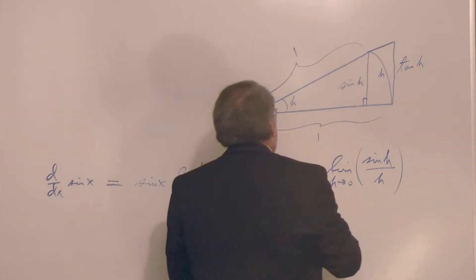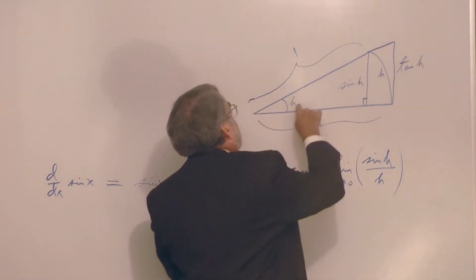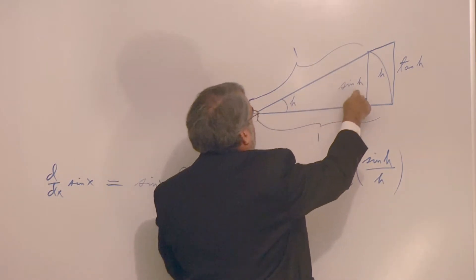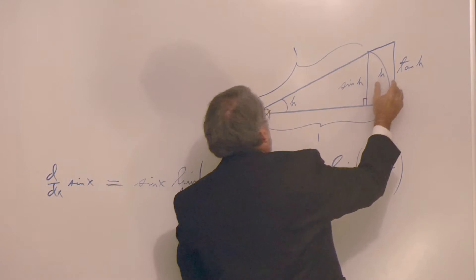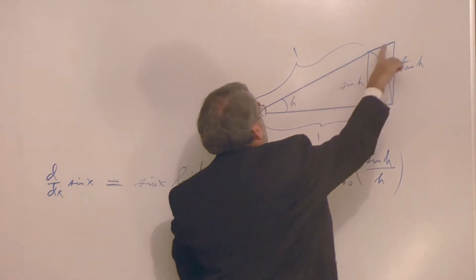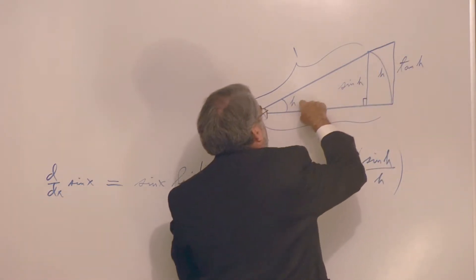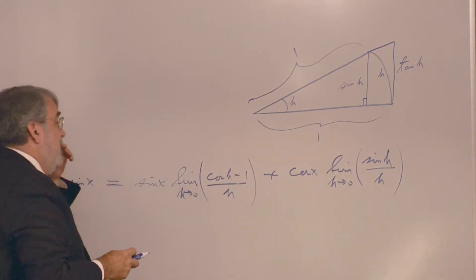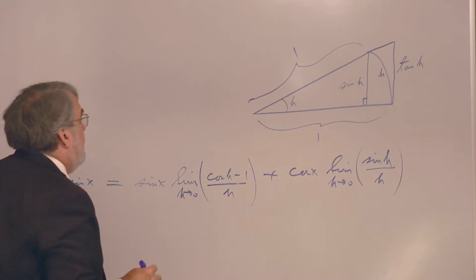And as far as the rest of this goes, I have from the small triangle, the sine of h is opposite over hypotenuse. So, sine of h is sine h divided by one. And for the large triangle, the tangent of h is opposite over adjacent. So, tangent h is tangent h divided by one. Very nice.